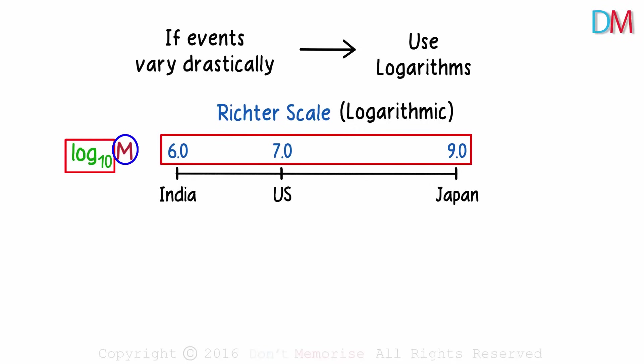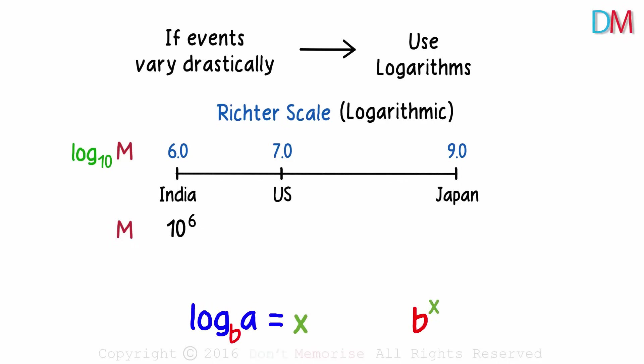Just that log to the base 10 of something gives us these numbers which tell us how strong the earthquake is. So if log of M to the base 10 is 6, what will be the value of M? It will be 10 raised to 6. If log A to the base B is X, then in the exponential form, B raised to X will equal A. Hence 10 raised to 6 will equal M.